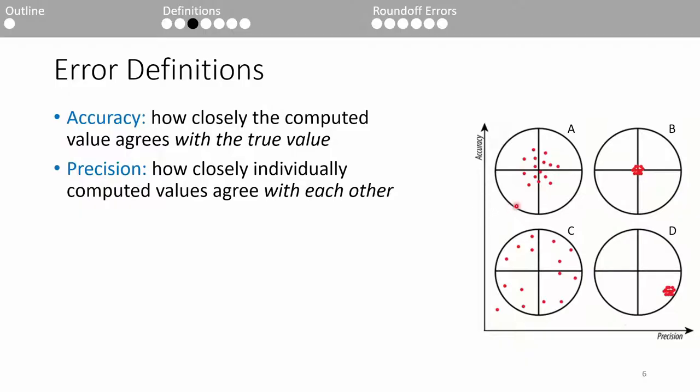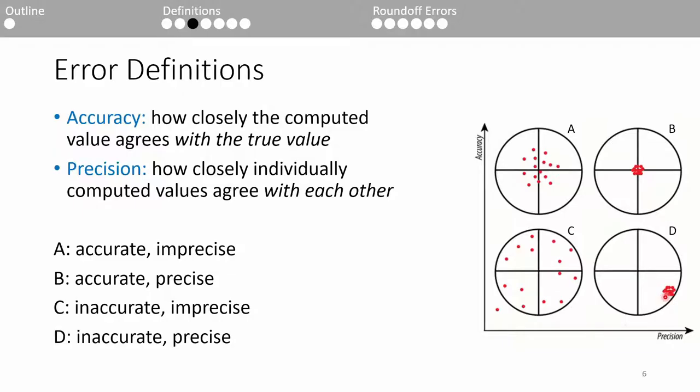If we look at A, all the darts are decently close to the bullseye, but they're spread out. We say that A is accurate but imprecise. On the other hand, all the shots in B are almost directly on top of the bullseye and there's very little spread in the throws. We say that B is accurate and precise. Going down to C, you're never hitting the center and your throws are wildly scattered. That's inaccurate and imprecise. And for D, you're never hitting the bullseye, but at least you're consistent, so we say you're inaccurate but precise.